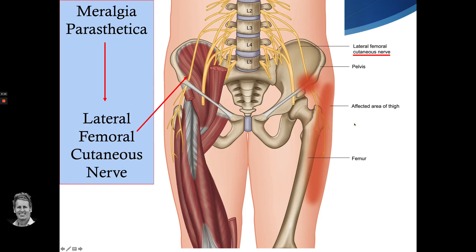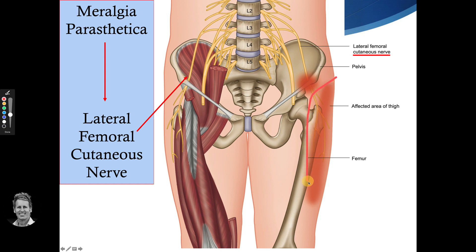Moving to the lateral femoral cutaneous nerve — it comes from L2 and also L3, comes under the inguinal ligament, and supplies the outer part of the thigh. If it gets caught around the area of the inguinal ligament, just underneath it, it can cause irritation and numbness in that outer thigh area.